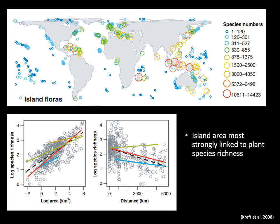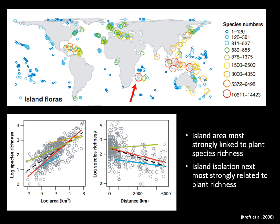At a global scale we see strong support for the predictions of the island biogeography theory. For example, Madagascar is a large island close to the continent, and therefore has high species richness because it's easy for species to colonize it and because species can all have large populations with a low chance of extinction. The other extreme would be a small and isolated island, which as predicted has low species richness.